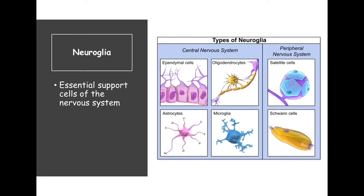Outside of the neuron, we have other types of supporting cells called neuroglia. Based on which system they belong to — central versus peripheral — there are different categories. In the central nervous system, where we find the brain and spinal cord, we have a series of these cells. The first category is the ependymal cells. These cells are found in the brain and specialize in making cerebrospinal fluid — they generate the fluid that circulates throughout the ventricles of the brain, bathing, protecting, and helping to nourish the brain.